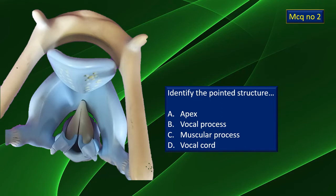To give you an orientation, this is a superior view — a view from the top of the larynx. The ivory colored structure is very clearly the hyoid bone. But then let's take a look at the other items. One particular structure has been highlighted by the flashing arrow. Think over and identify that structure.